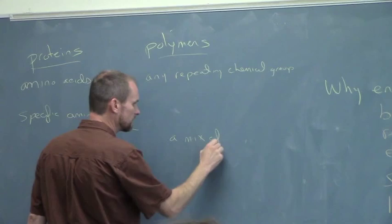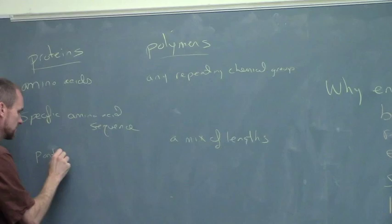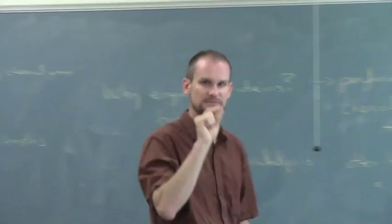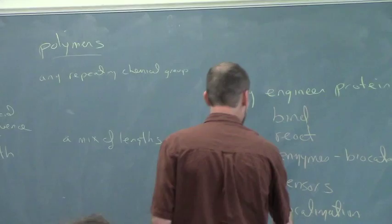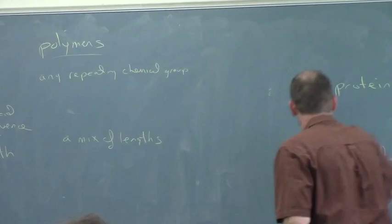Proteins are specific - they have a specific amino acid sequence. This could be basically any sequence of residues that we put together in the gene to code for the proteins. Whereas polymers, you're typically polymerizing things. Polymers would often be a mix of lengths, whereas a protein would have a particular length.